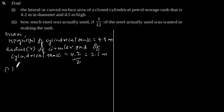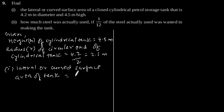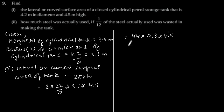Now lateral or curved surface area of tank is equal to 2πrh. Putting the value of r and h we will get 2 into 22 by 7, r is 2.1 and h is 4.5. This is equal to 44 into 0.3 into 4.5 which is equal to 59.4 meter square.